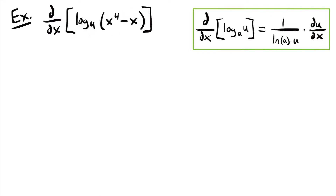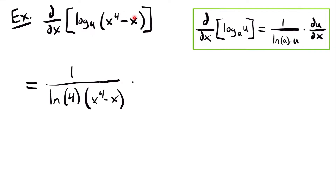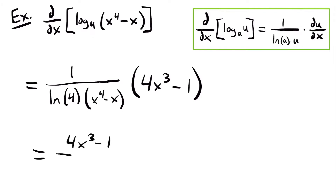Using that rule in this scenario, the derivative is equal to 1 divided by the natural log of the base 4 times x to the power of 4 minus x, multiplied by the derivative of that function inside the log function. The derivative of x to the fourth power using the power rule is 4x cubed, because we multiply the 4 down to get 4 times x to the power of 4 minus 1, leaving an exponent of 3. Then the derivative of negative x is negative 1. So we can simplify to have 4x cubed minus 1 divided by the natural log of 4 times x to the fourth power minus x.